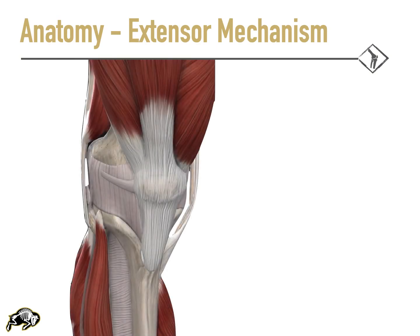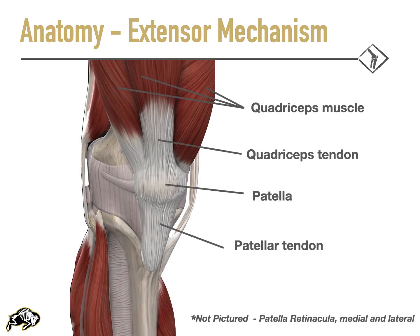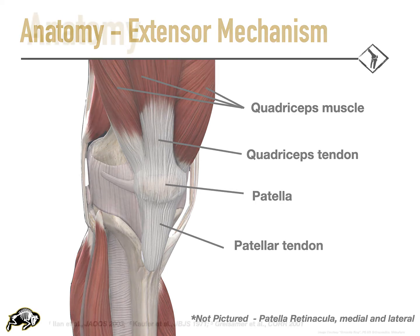A brief review of anatomy here. The extensor mechanism is comprised of the quad muscle, quad tendon, patella, patellar retinaculum, patellar ligament — also commonly referred to as the patellar tendon — and adjacent soft tissues.